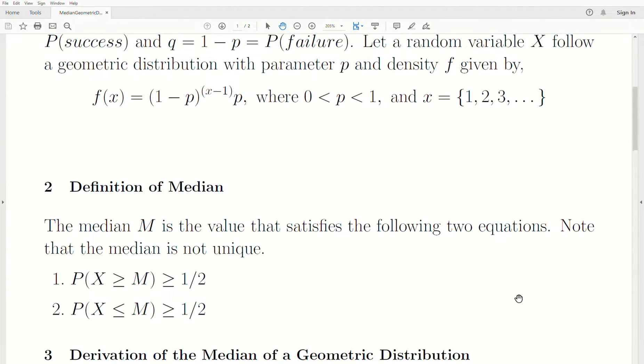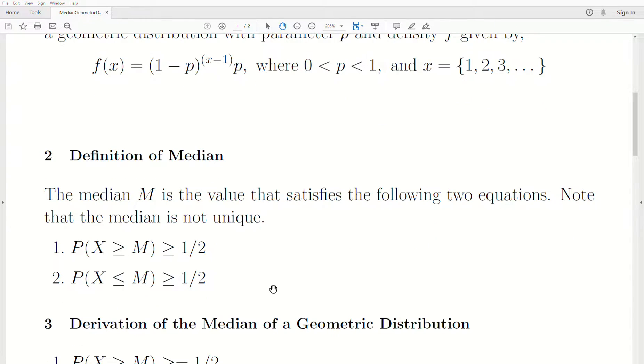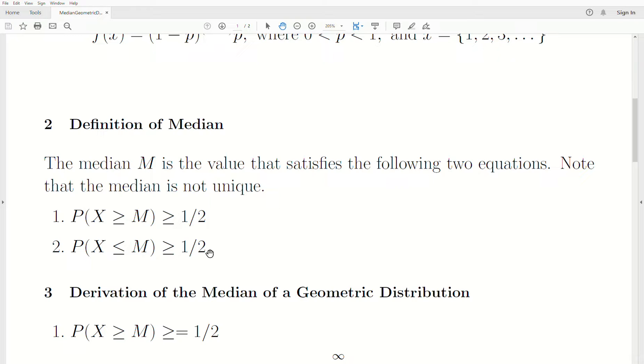A quick definition or review of the median. The median M is the value that satisfies the following two equations, and note that the median does not need to be unique. In the continuous case it is unique, in the discrete case it doesn't have to be unique.